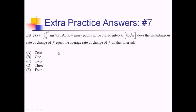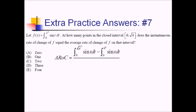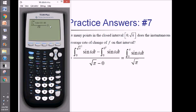Getting the AROC first: f(√π) minus f(0) over √π minus 0. The numerator is the integral from 0 to (√π)² of sine of t, minus the integral with 0 squared in the upper limit — which is an empty integral. So the numerator simplifies to the integral from 0 to π of sine of t, divided by √π. Since I'll need to compare this against IROC on the calculator, I'll compute this value now and store it as alpha A.